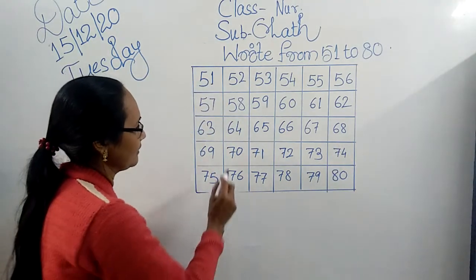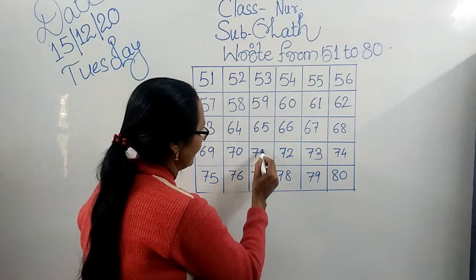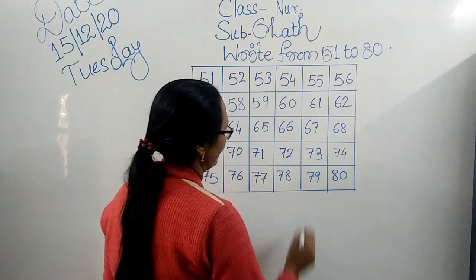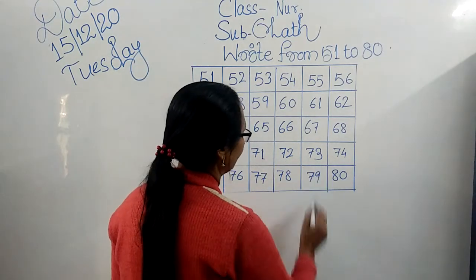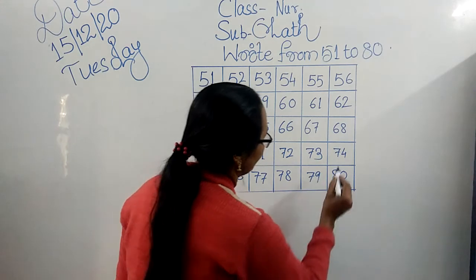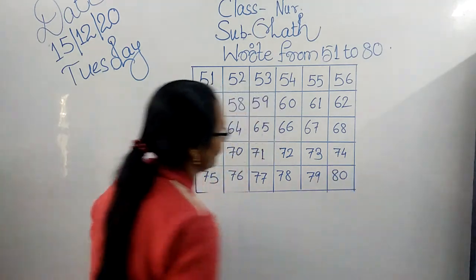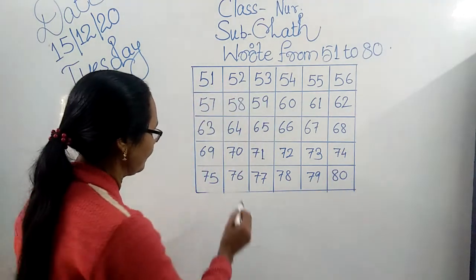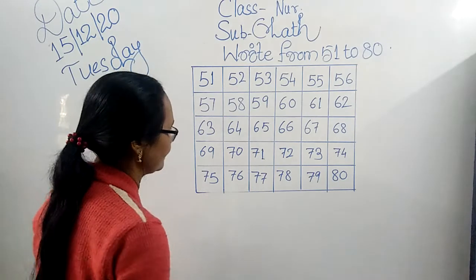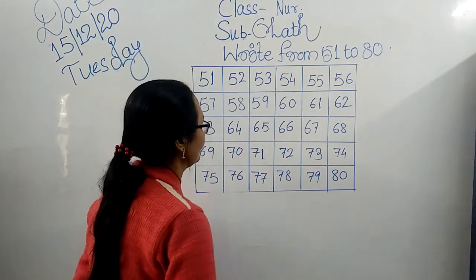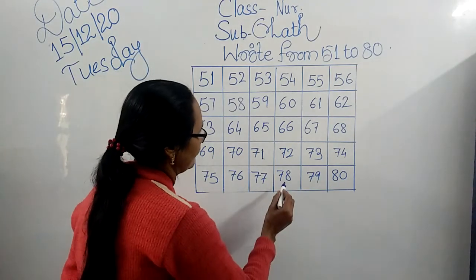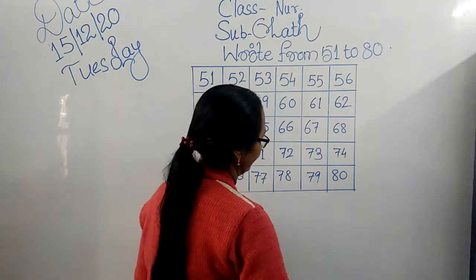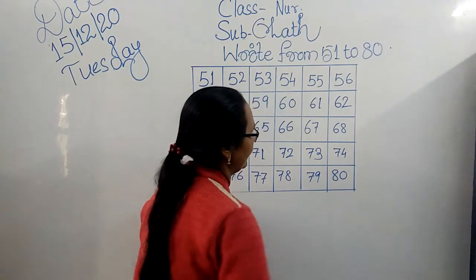7, 0 — 70. 7, 1 — 71. 7, 2 — 72. 7, 3 — 73. 7, 4 — 74. 7, 5 — 75. 7, 6 — 76. 7, 7 — 77. 7, 8 — 78. 7, 9 — 79.